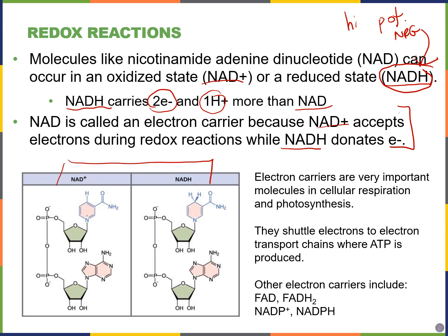These electron carriers are derived from our B vitamins and are really important — we'll see them in both cellular respiration and in chapter 8 when we talk about photosynthesis. They eventually donate or re-release their electrons to other molecules to become oxidized again. We'll see other high-energy electron carriers like FADH2, and in chapter 8 we'll see NADP+ becoming reduced to NADPH — used in photosynthesis. I remember the P for photosynthesis or plants, though it actually stands for phosphate.